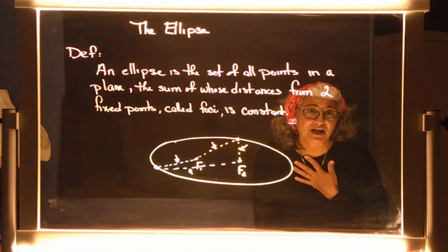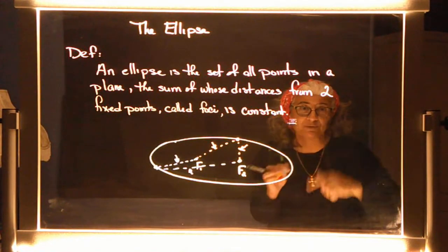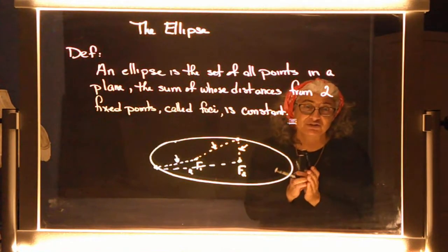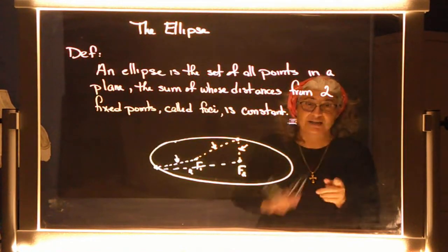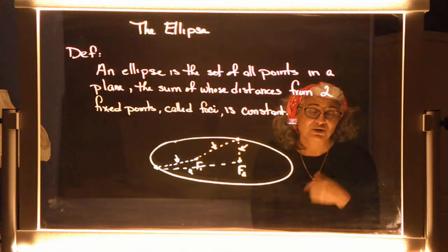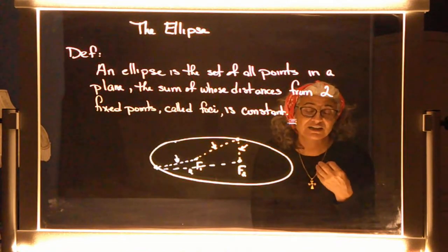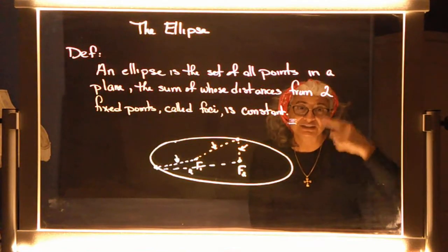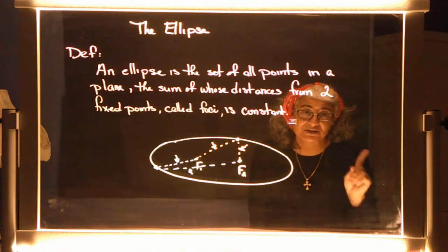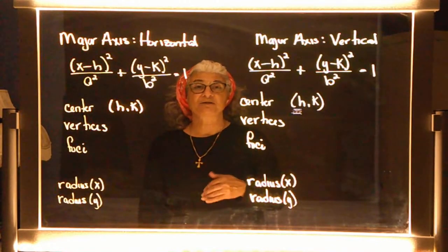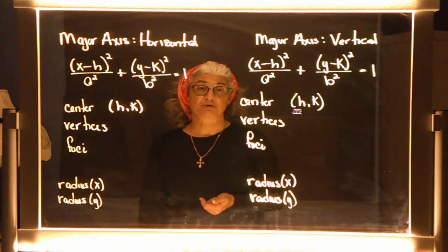I also call an ellipse a 'smooshed circle.' If I take a circle and smoosh it vertically, it would be longer in the y direction. If I smoosh it horizontally, it would be longer in the x direction. We've got a couple of formulas that go along with a vertical ellipse or a horizontal ellipse.